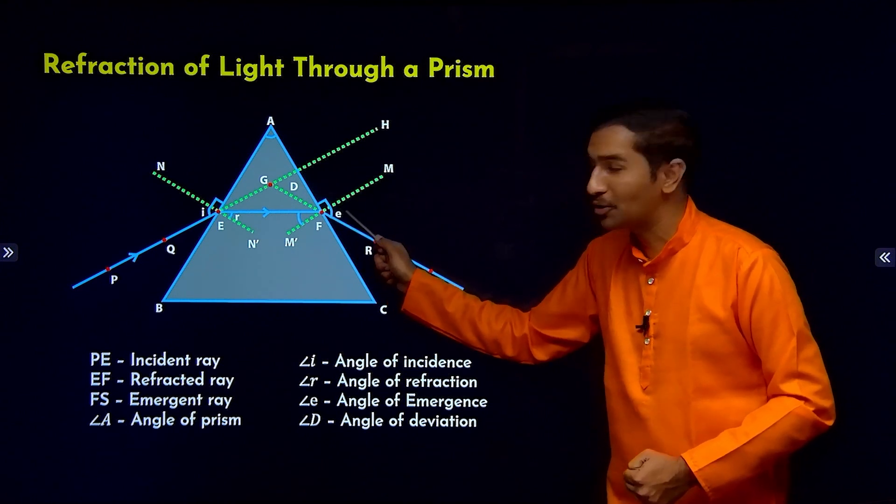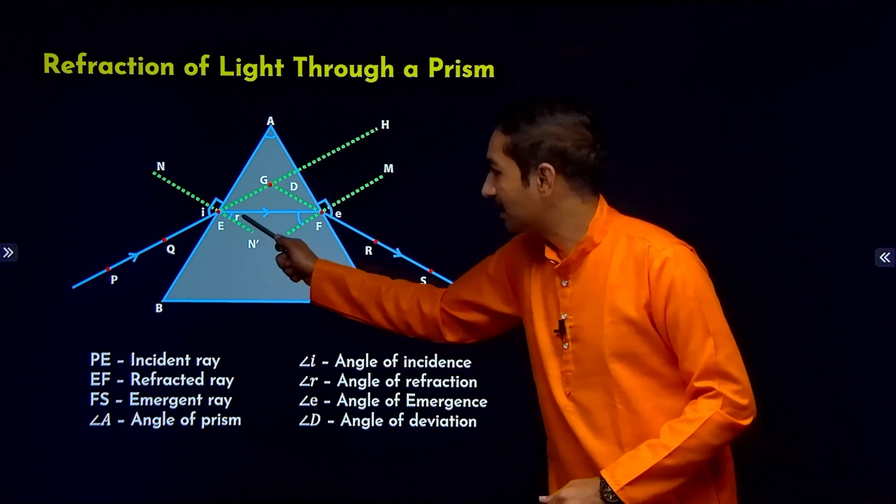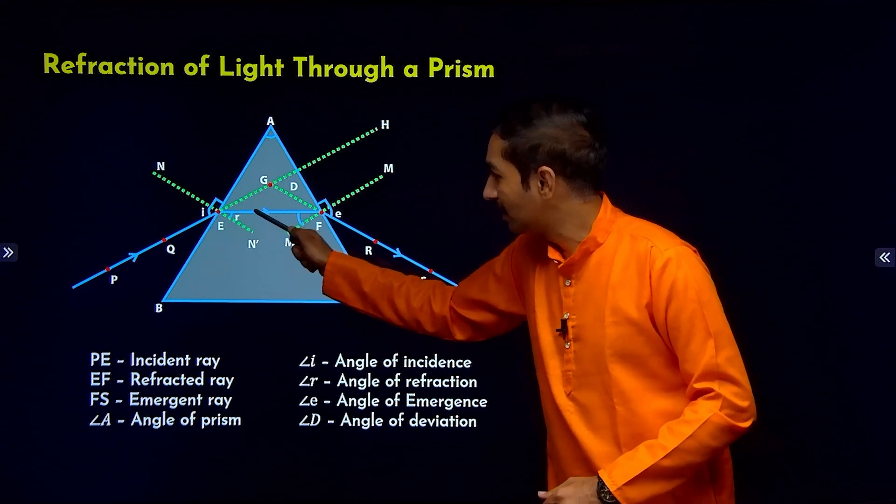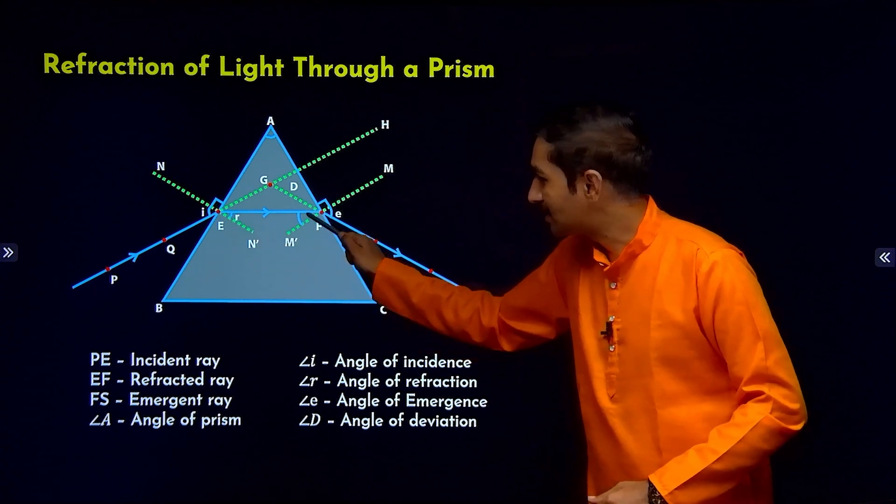Angle of emergence is the angle between the normal at this point and the emergent ray. This is called as angle of emergence. Similarly, angle of refraction is the angle between the refracted ray and the normal at this point. This is called as angle of refraction.